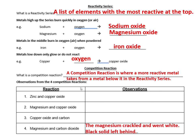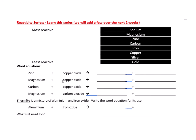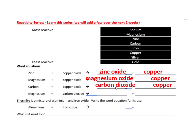The word equations: zinc plus copper oxide gives zinc oxide plus copper — zinc steals the oxygen. Magnesium plus copper oxide gives magnesium oxide plus copper. Carbon plus copper oxide gives carbon dioxide plus copper. And magnesium plus carbon dioxide gives magnesium oxide plus carbon — note there was a typo in the worksheet there.